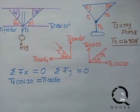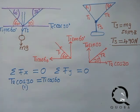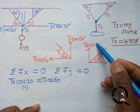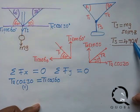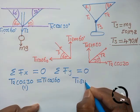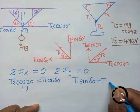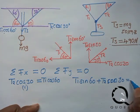For the y-direction, the summation of upward forces must equal the downward force. The upward components are T1 sin 60 and T2 sin 30, and the downward force is T3. So: T1 sin 60 + T2 sin 30 = T3. This is our second equation.